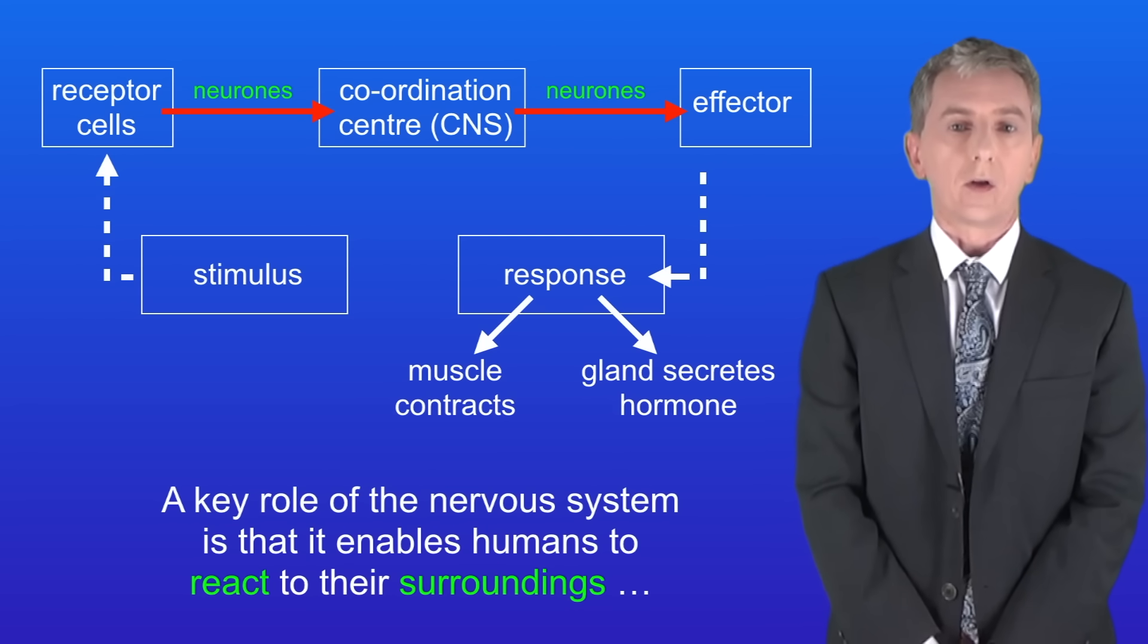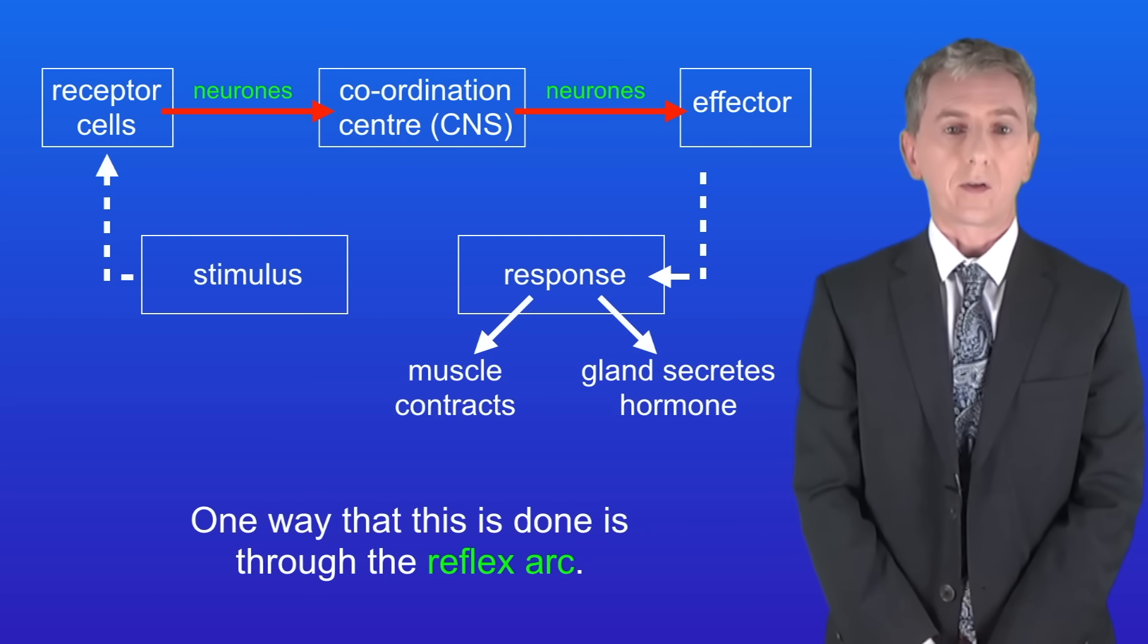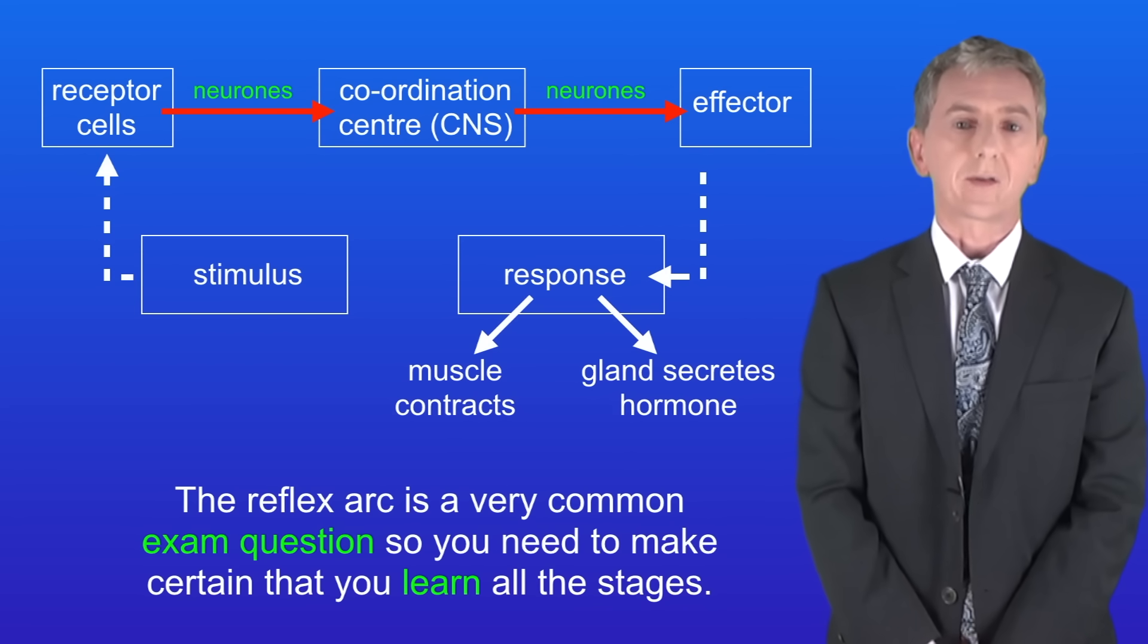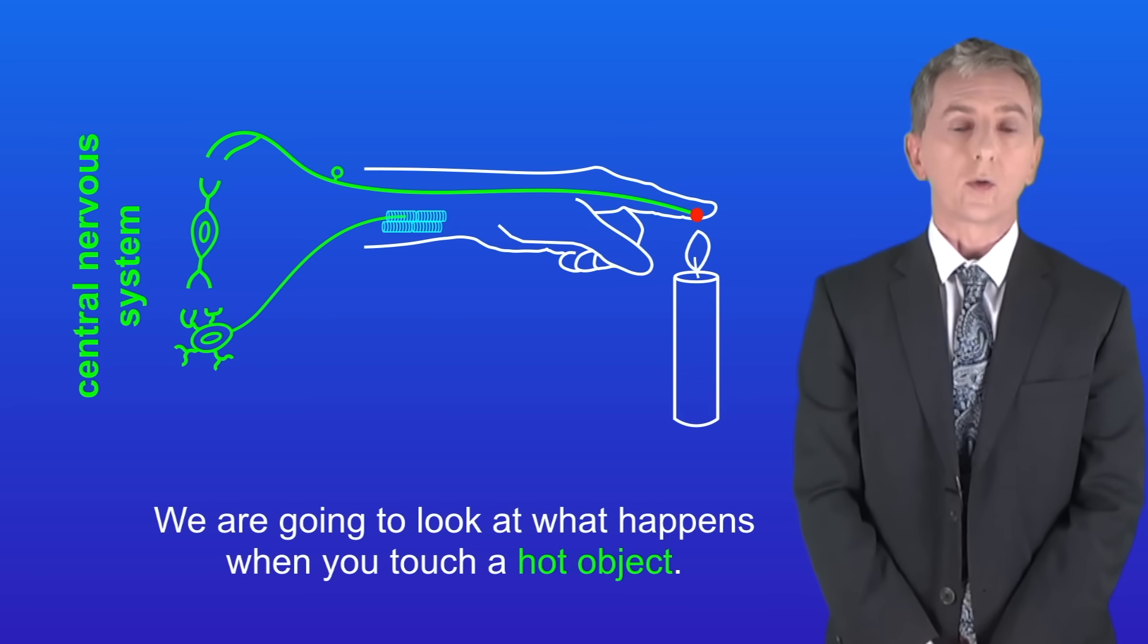Now a key role of the nervous system is that it enables humans to react to their surroundings and coordinate their behaviour. And one way that this is done is through the reflex arc. The reflex arc is a very common exam question so you need to make certain that you learn all the stages. We're going to look at what happens when you touch a hot object.